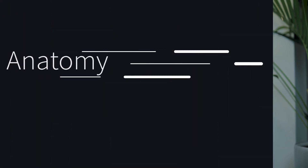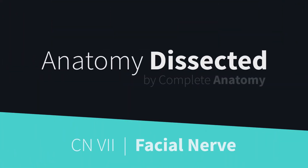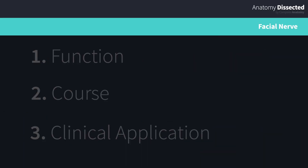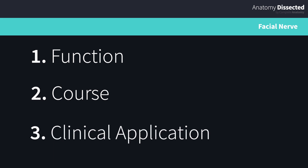Welcome back to Anatomy Dissected by Complete Anatomy. Here's another cranial nerve for you — this time it's cranial nerve 7, the facial nerve. As usual, we'll have a look at the function and course of this nerve and apply that knowledge as we consider facial paralysis.